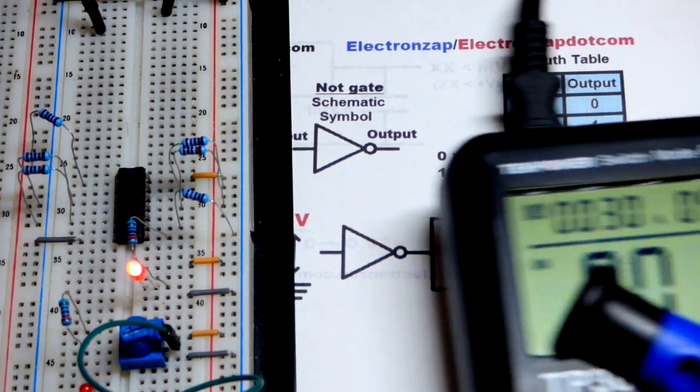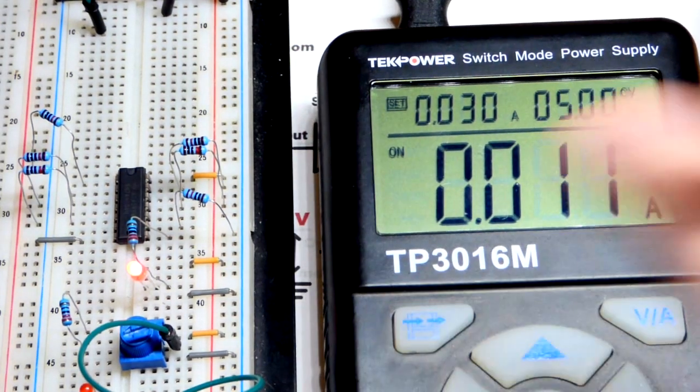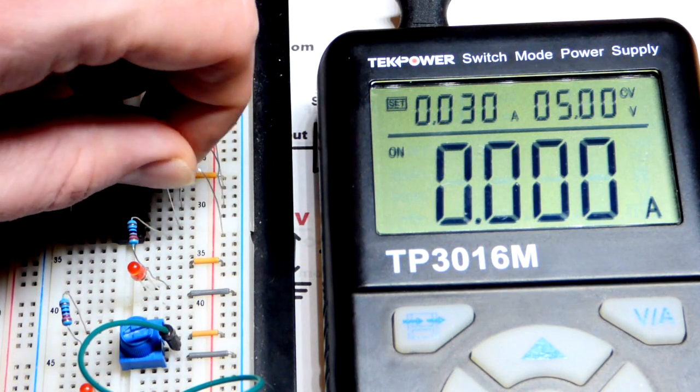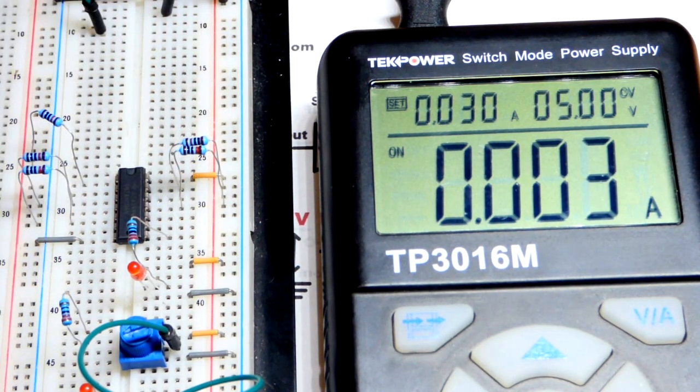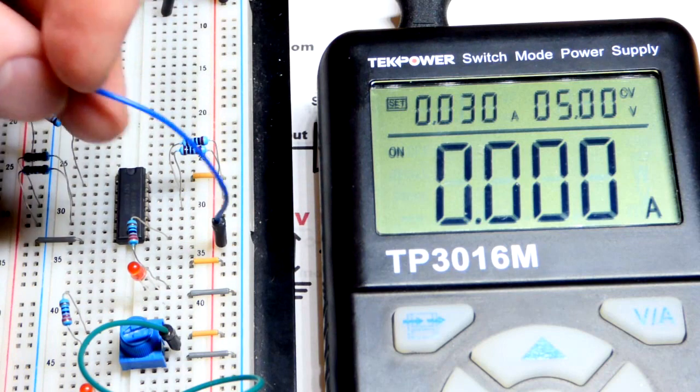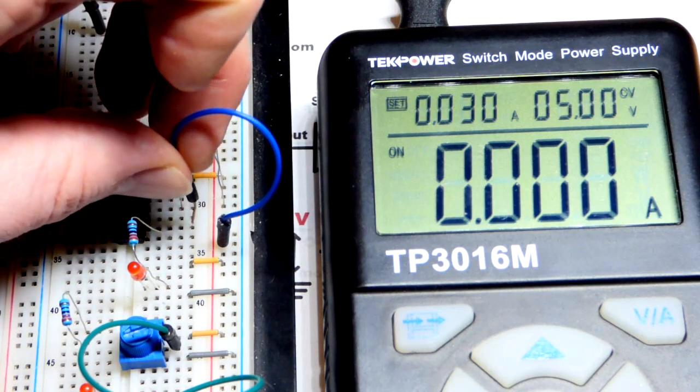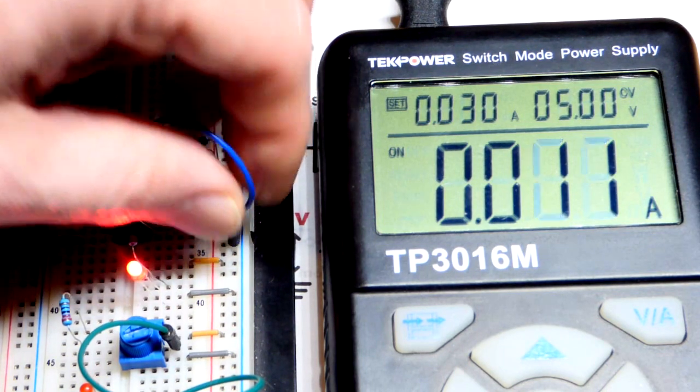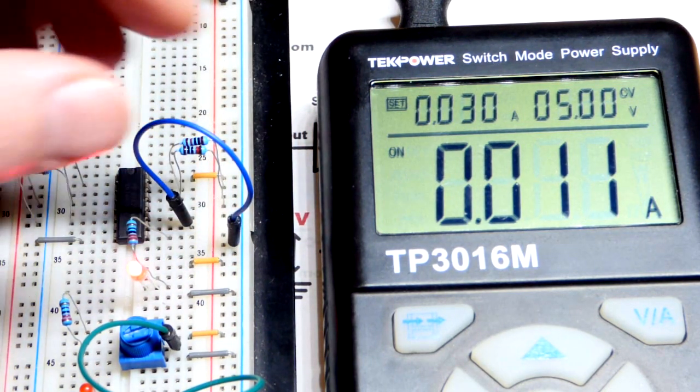And we will look at the current needed. So 11 milliamps while the LED is on. And none while the LED is off. As long as it's not floating. And so we don't need the resistor. I'll take the jumper to the positive rail. Put that to the input. And there you can see no current. But if I move it over to the negative, now we have that 11 milliamps.